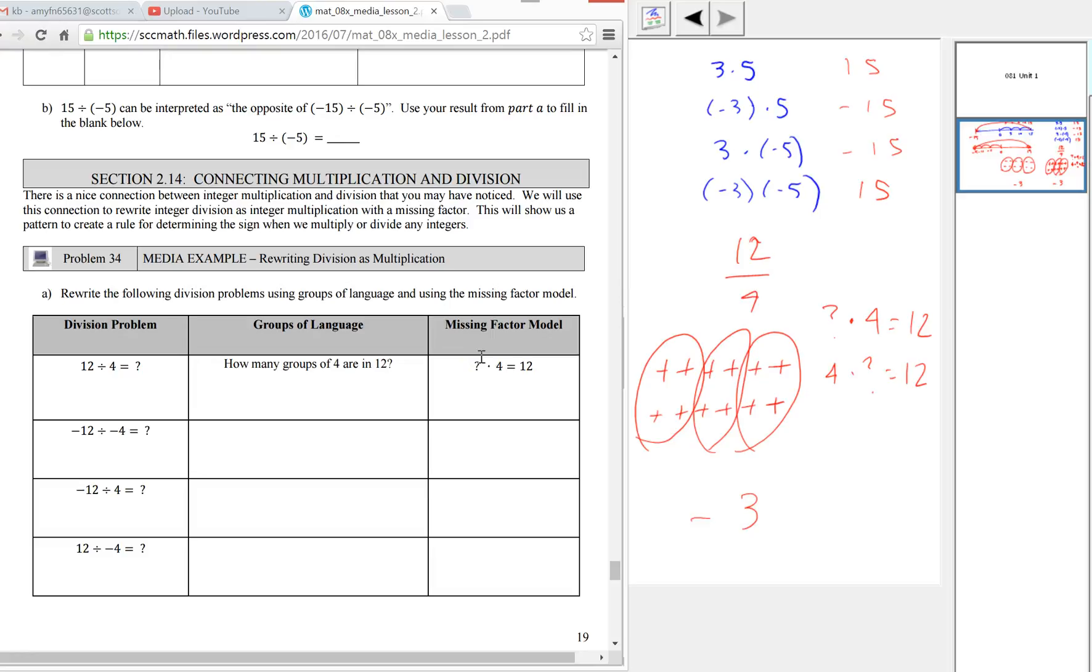Throughout this whole course, we're not going to use x's or variables. In the infrequent places where we want an unknown in an equation like this, we'll use a question mark. Connecting division and multiplication, how one of them is just a missing factor. You can use this idea to get them to see the patterns between the sign results between multiplication and division and why negative divided by negative is positive, negative times a negative is positive, etc.